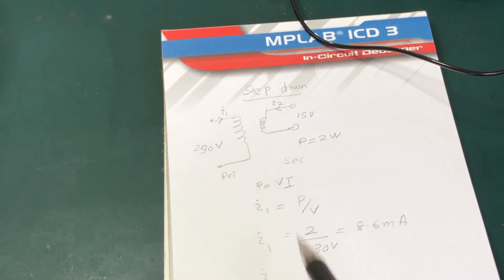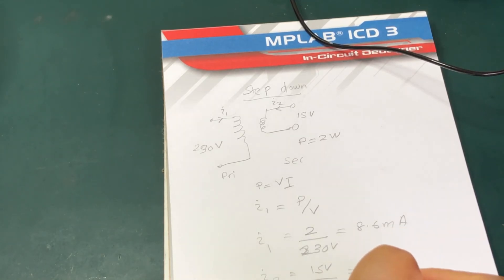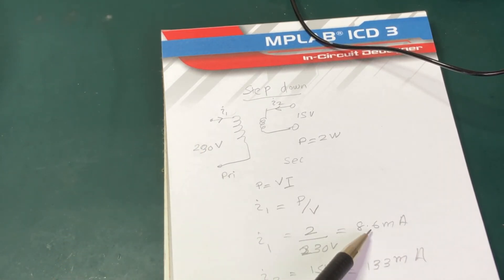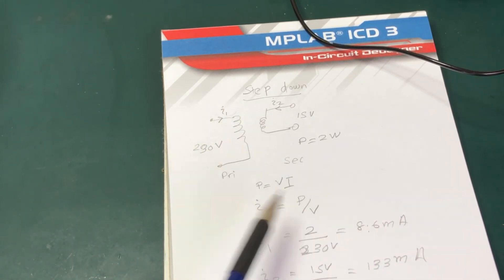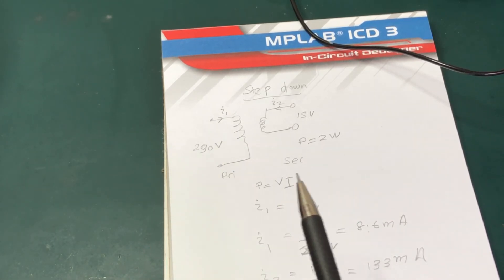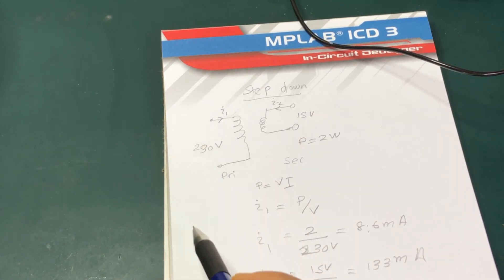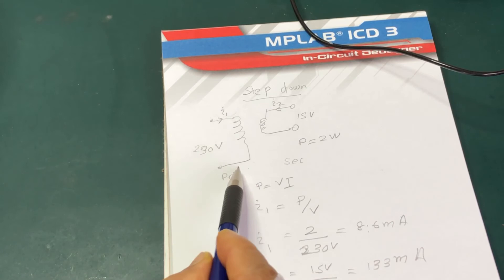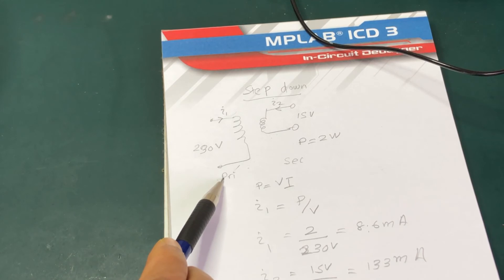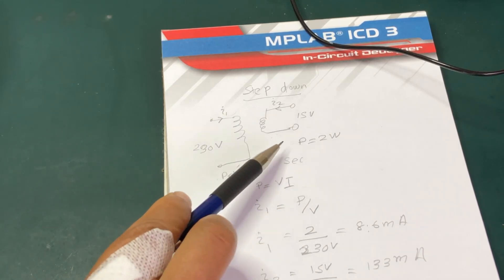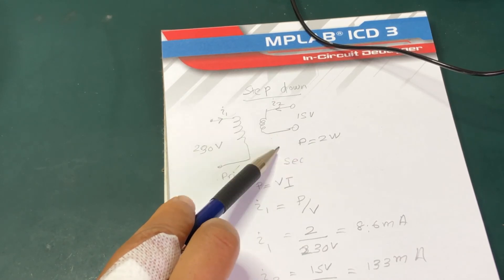We also find the secondary side current I₂, which equals 2 watts divided by 15 volts, giving approximately 130 milliamps. So the primary side current is smaller and the secondary side current is higher. To accommodate this smaller current, the primary side will have a smaller cross-section coil, and to accommodate the higher current, the secondary side will have a larger cross-section coil.